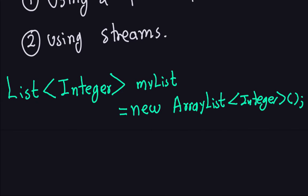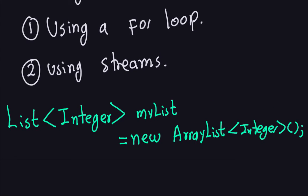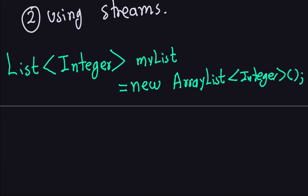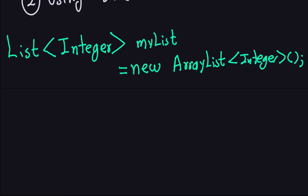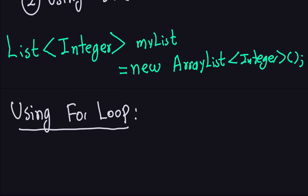Once I create that list of integers, I need to populate it. We're going to do it in two ways: with a for loop and with streams, and the integers are going to be randomly generated. For the for loop, you start with the for keyword, open parentheses, initialize your counter, and set it to run — let's say for 10 numbers, so i less than 10.